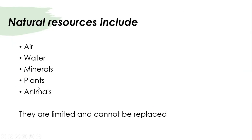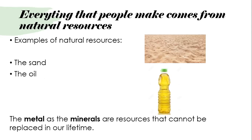Natural resources include the air, the water, minerals, plants, and animals. They are limited and cannot be replaced. Everything that people make comes from natural resources. For example, people use sand and oil — both are natural resources. Metals and minerals are resources that cannot be replaced in our lifetime.